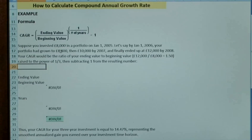So what we're looking to do now is find the first section of the formula, so the ending value divided by the beginning value. So from the example we see that the ending value is £12,000, the beginning value is £8,000, which gives us a figure of 1.5.